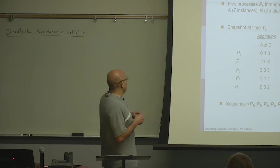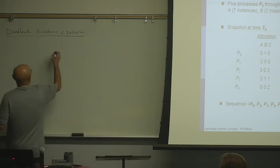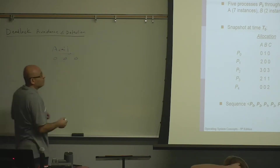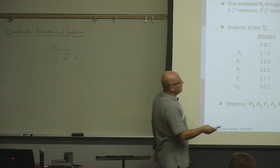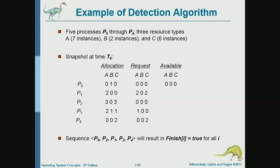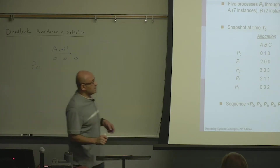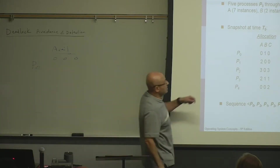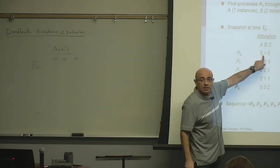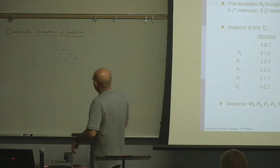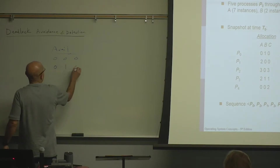So we just analyze it the same way. Available is zero, zero, zero, and we scan through the list of processes. Can we satisfy P0? Definitely — it's requesting zero, so yes. We put P0. After P0 is done, it's going to release its allocation, so we add that to available. We end up with zero, one, zero.